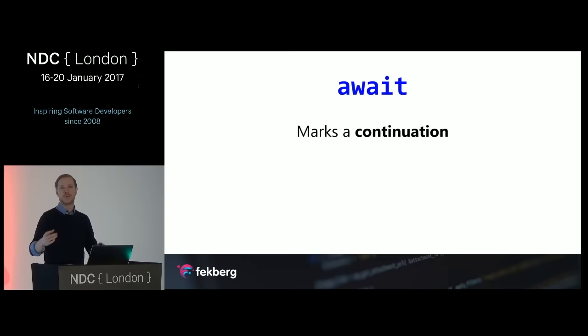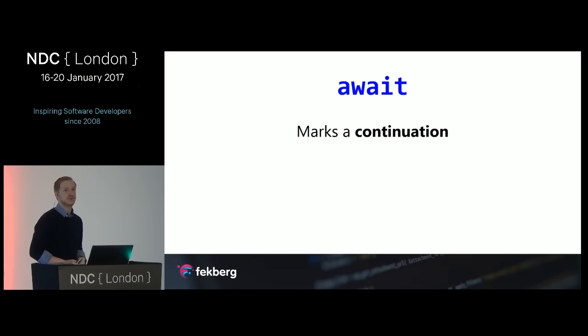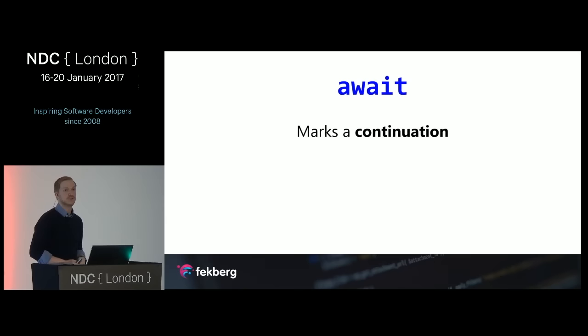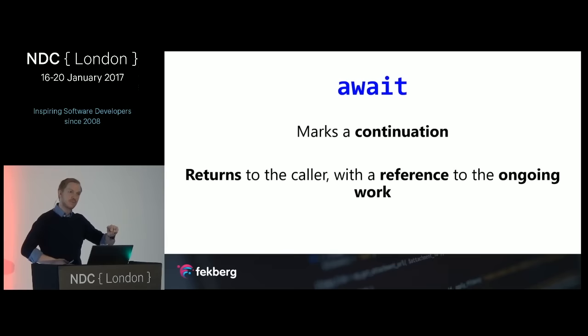The await keyword is similar to ContinueWith — it marks a continuation. When we see the await keyword, it returns back to the caller with a reference to the ongoing operation. So when we see await, it goes back to where the caller called our asynchronous method and continues with the next line after that.